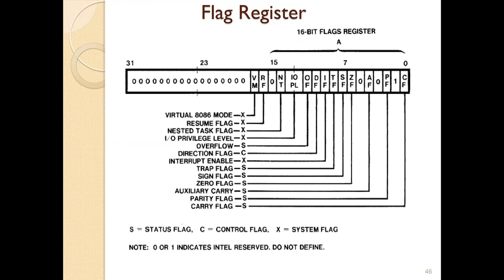CF stands for the carry flag — whenever a carry is generated, this flag bit is set. The parity flag is set when parity instructions are executed. The auxiliary carry flag is set when an auxiliary carry is generated during addition and subtraction. The zero flag is set whenever the result of an arithmetic operation becomes zero. The sign flag indicates the sign of the result, whether positive or negative. The trap flag and interrupt enable flag enables interrupts. The direction flag gives the direction for string operations. The overflow flag is set whenever an overflow occurs in an arithmetic operation.